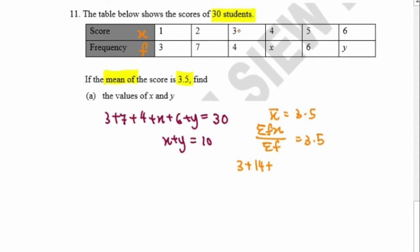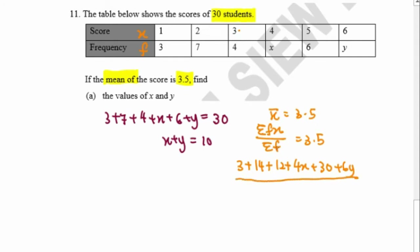Continuing: 3 times 4 equals 12, then 4x, then 5 times 6 equals 30, and 6y. We total these up and divide by the sum of the frequencies. Since we have 30 students, the sum of frequencies is 30. So the equation equals 3.5.